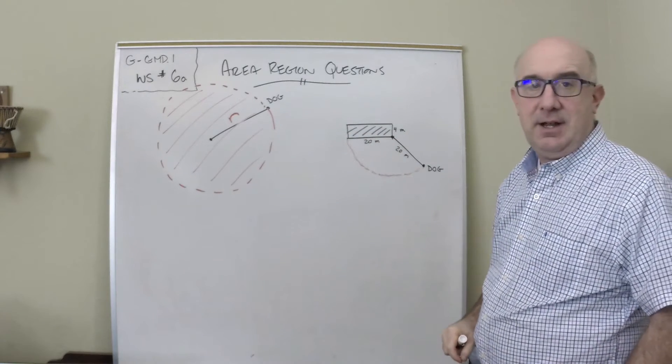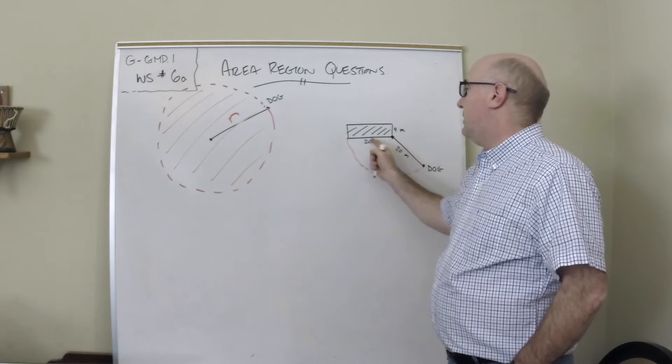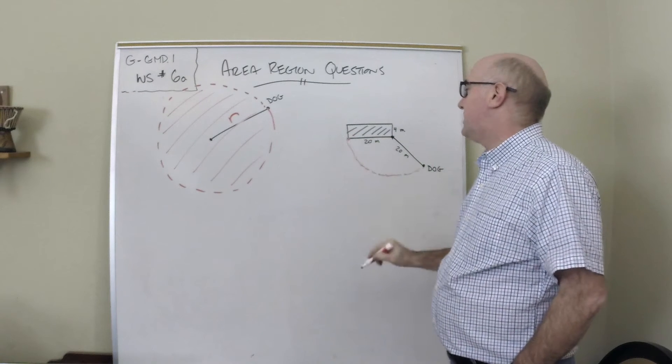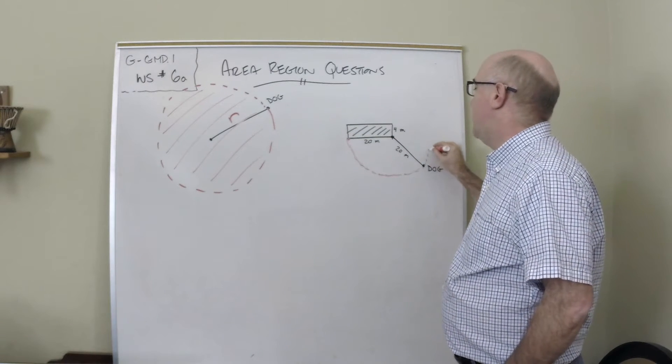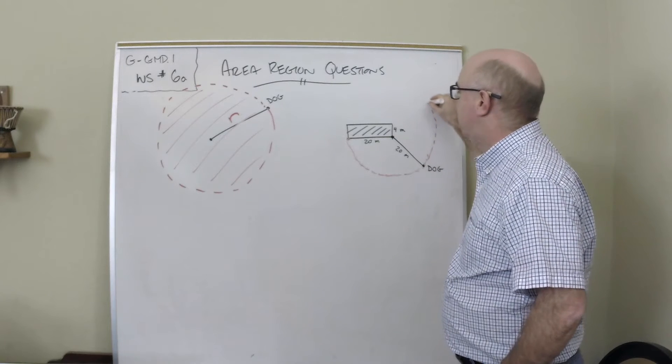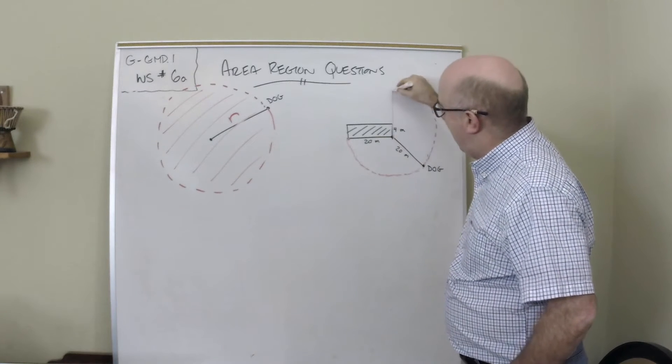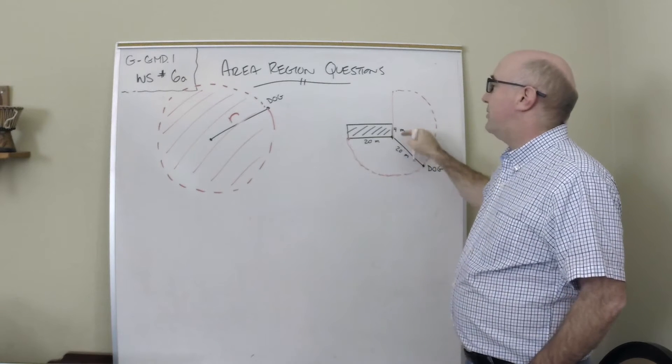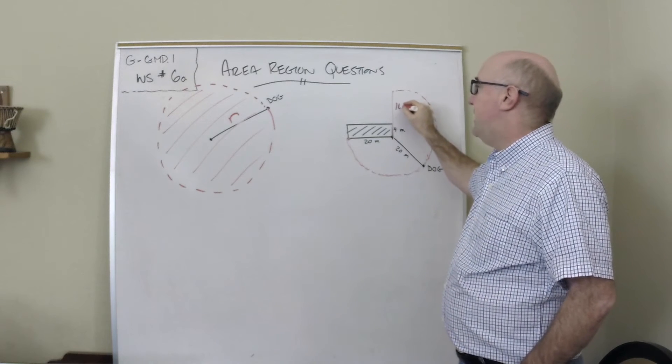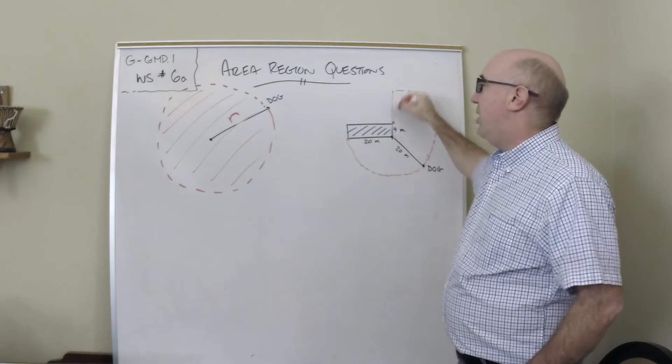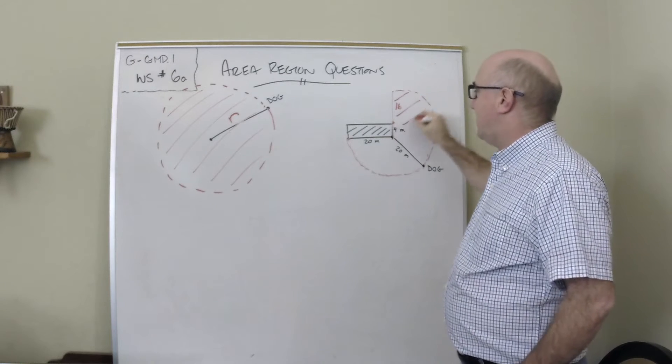...the 20 meters would go right to that spot. The dog could continue in a circular pattern to get up to this location, and there's 4 meters used, so there would be 16 meters length beyond the building.